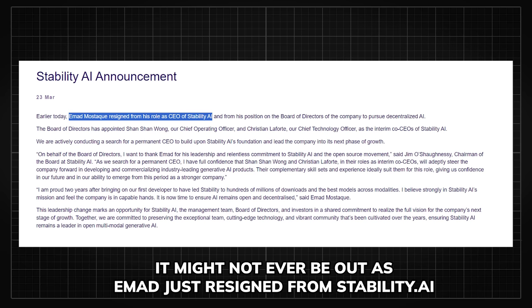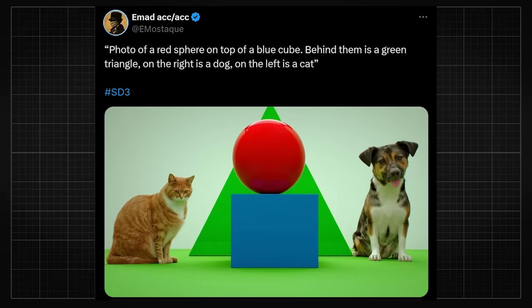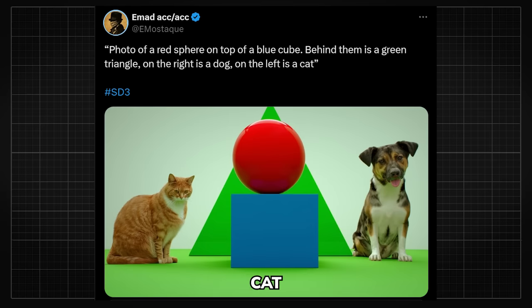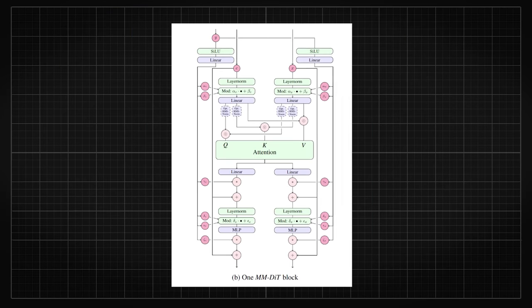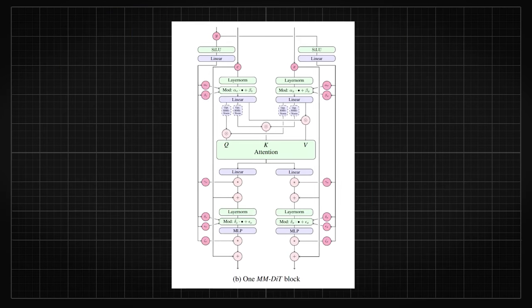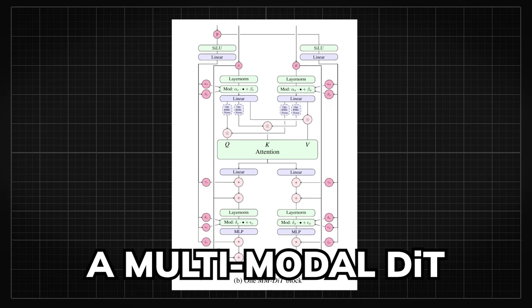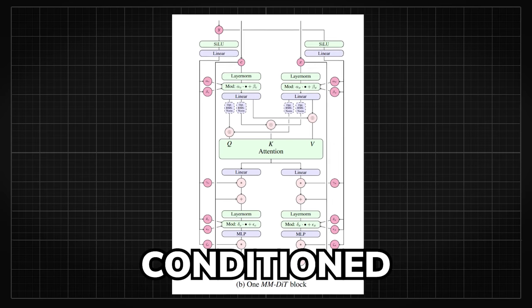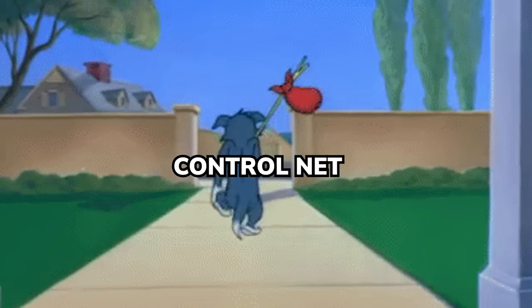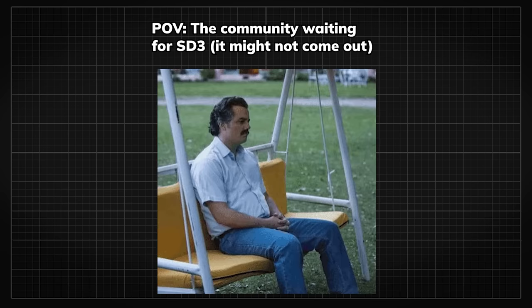I cannot confirm it since it's not out, but hopefully it's that good. Emad has also claimed that it is the best at understanding complex scene compositions — like a photo of a red sphere on top of a blue cube, behind them is a green triangle, on the right is a dog, and on the left is a cat. No other models have been able to accurately generate this before. We've also been teased in the technical paper that SD3's DiT is a multi-modal DiT, meaning image generation with SD3 can directly be conditioned on images, which means we would not need ControlNet anymore.